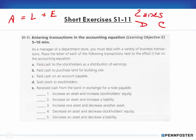Transaction A: paid cash to stockholders as a distribution of earnings. Paying cash means cash is decreasing — that's a decrease in an asset. And since earnings are in the equity section and we're paying them out, equity is also decreasing. So transaction A is a decrease in an asset and a decrease in equity.